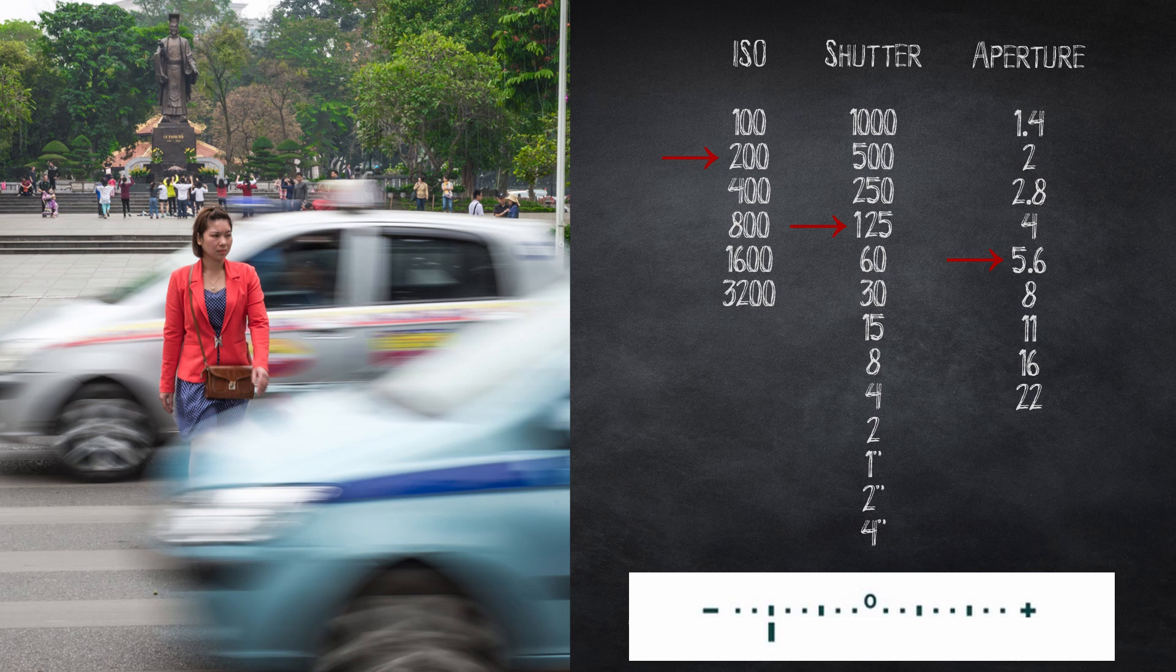So first thing we do is slow down the shutter to 1/60th of a second. That should be slow enough to give us the motion blur we are looking for. This also gives us back one stop of light.